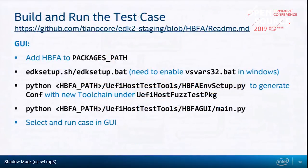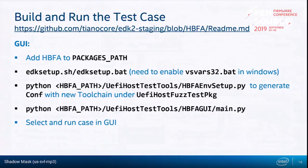There is a GUI way of running the tests. You add HBFA to your packages path as part of your EDK2 environment setup and set up the EDK build environment for Linux or Windows. There's a Python script to generate the configuration with a new toolchain that sets up the host fuzz test package, and then another Python script that starts the GUI, which lets you select the different test cases. This depends on which test apparatus you've installed — you can install everything HBFA supports or just a subset.